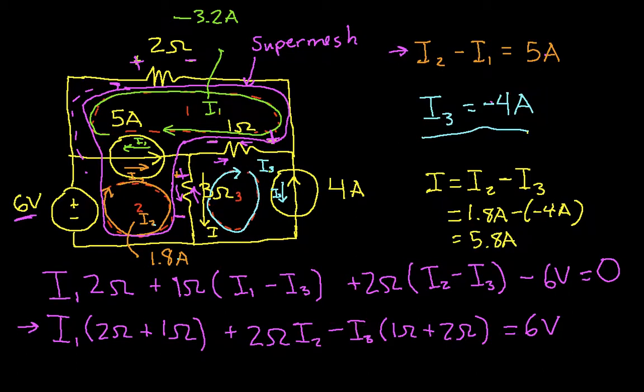If I then wanted to find the voltage across the 3 ohm resistor, it would be this current times 3. So the voltage, if we call this V, we can have V is 3 ohms times 5.8 amps, which will be 17.4 volts, if I've got that right. So I can find similarly other voltages and currents as necessary through the circuit.